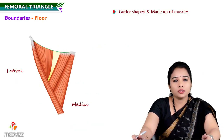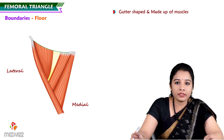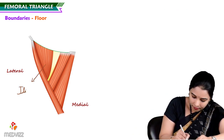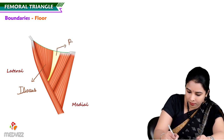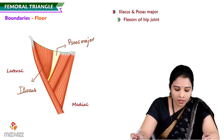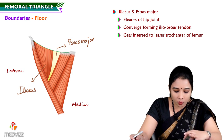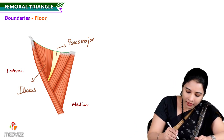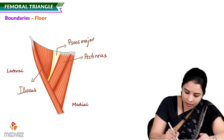Let's see the floor. The floor is gutter-shaped and made up completely of muscles. From lateral to medial, it is formed by the iliacus — the lateral-most muscle — then the tendon of psoas major. Iliacus and psoas major are both flexors of the hip joint and converge forming the iliopsoas tendon, which inserts into the lesser trochanter of the femur. Next is pectineus, and medial to pectineus is adductor longus.